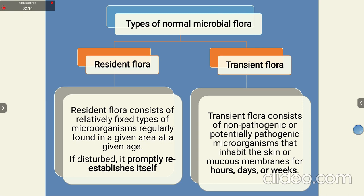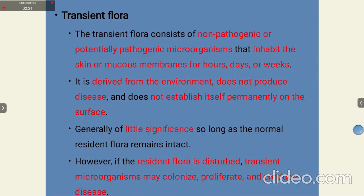Transient microorganisms are non-pathogenic or potentially pathogenic microorganisms that inhabit the skin or mucous membranes for hours, days, or weeks. They come from the environment, do not produce disease, and do not establish themselves permanently on the surface. They have little significance so long as the normal resident flora remains intact. However, if the resident flora is disturbed, transient microorganisms may colonize, proliferate, and produce disease.